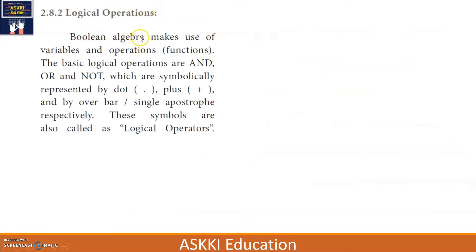Coming to logical operations — Boolean Algebra depicts the relation between inputs and outputs. The basic logical operations are AND, OR, and NOT. Symbolically, AND is represented by the dot symbol, similar to multiplication. OR is represented by the plus symbol. NOT is represented by an overbar or a single apostrophe.